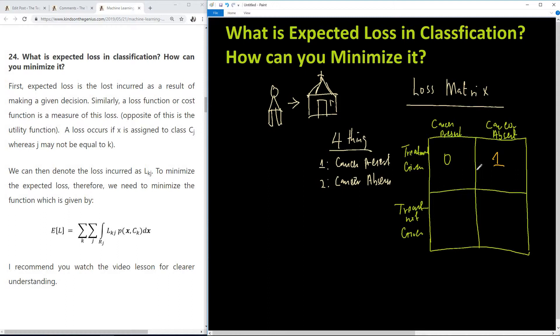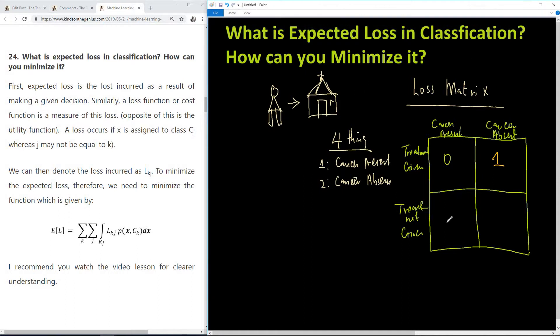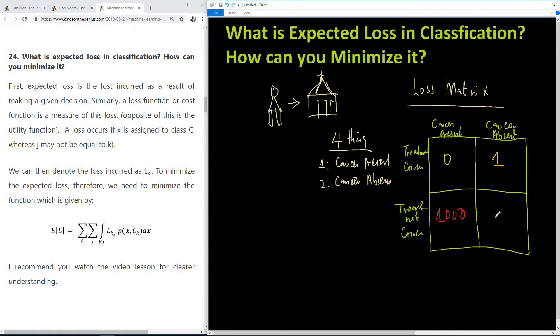We also have cancer is present and treatment is not given. This is the problem. There is cancer but treatment is not given - it may lead to death, loss of life. So this will be a heavy loss of 1000 incurred when cancer is present and treatment is not given. On the other hand, if cancer is absent and treatment is not given, there is no loss - it is zero. This is the loss matrix, and this helps you see that expected loss is different from misclassification.